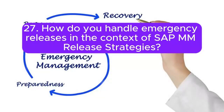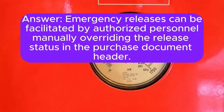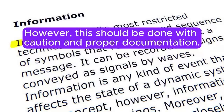Question 27: How do you handle emergency releases in the context of SAP MM release strategies? Answer: Emergency releases can be facilitated by authorized personnel manually overriding the release status in the purchase document header. However, this should be done with caution and proper documentation.